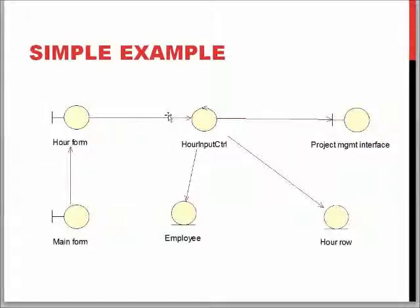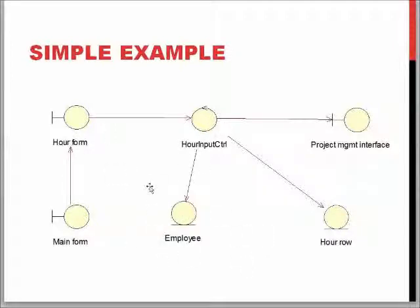In this simple example, there's the main form and the project management interface which are the boundary classes — the connections which collect information and show information to the user. There's an hour input control class that has the role of ensuring there's not more than 60 minutes per hour or more than 24 hours per day in the hour formatting, and might also do things like formatting and similar tasks. The connections go to entity classes which store the hour input information into the employee database entry and hour row database entry.